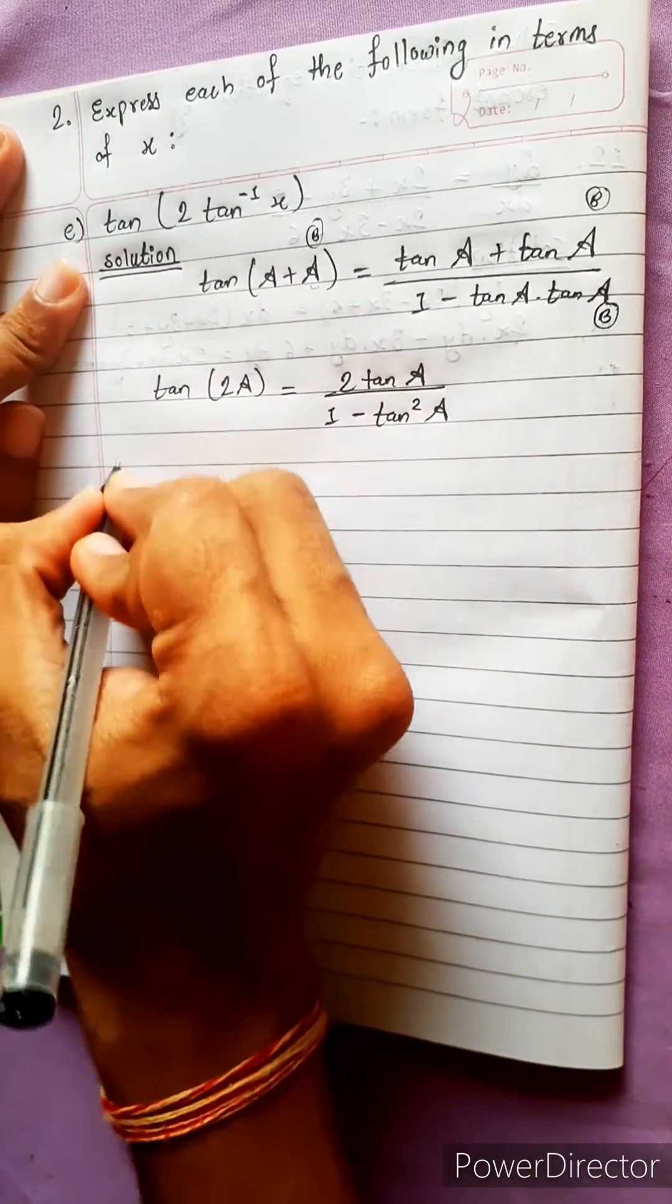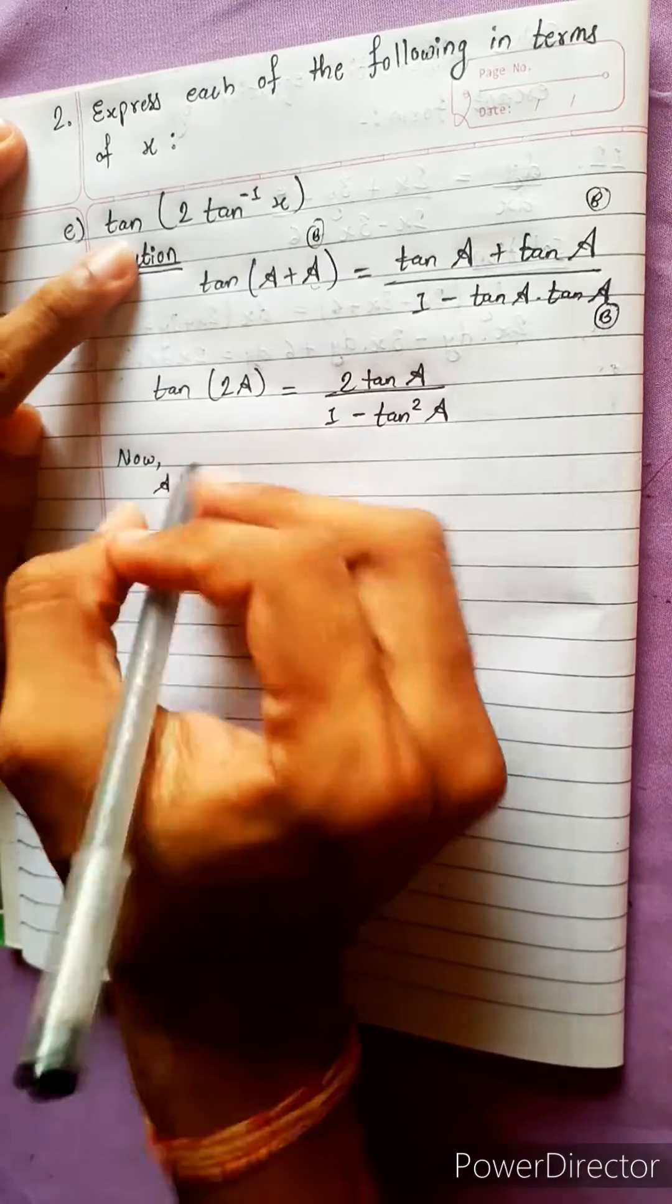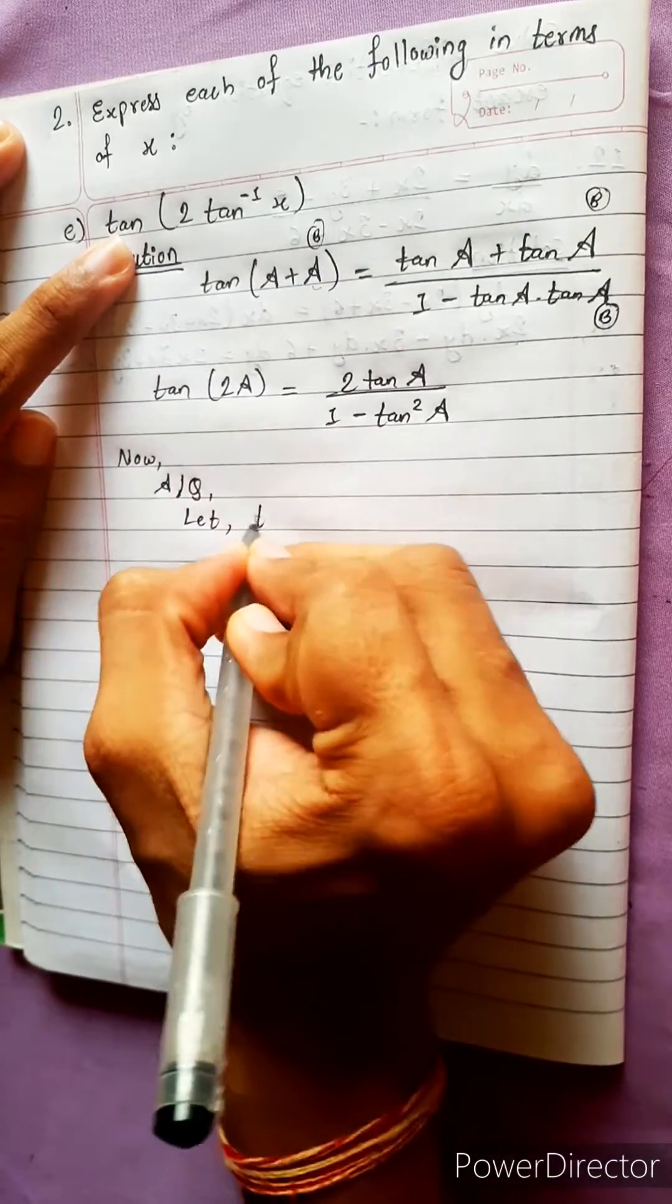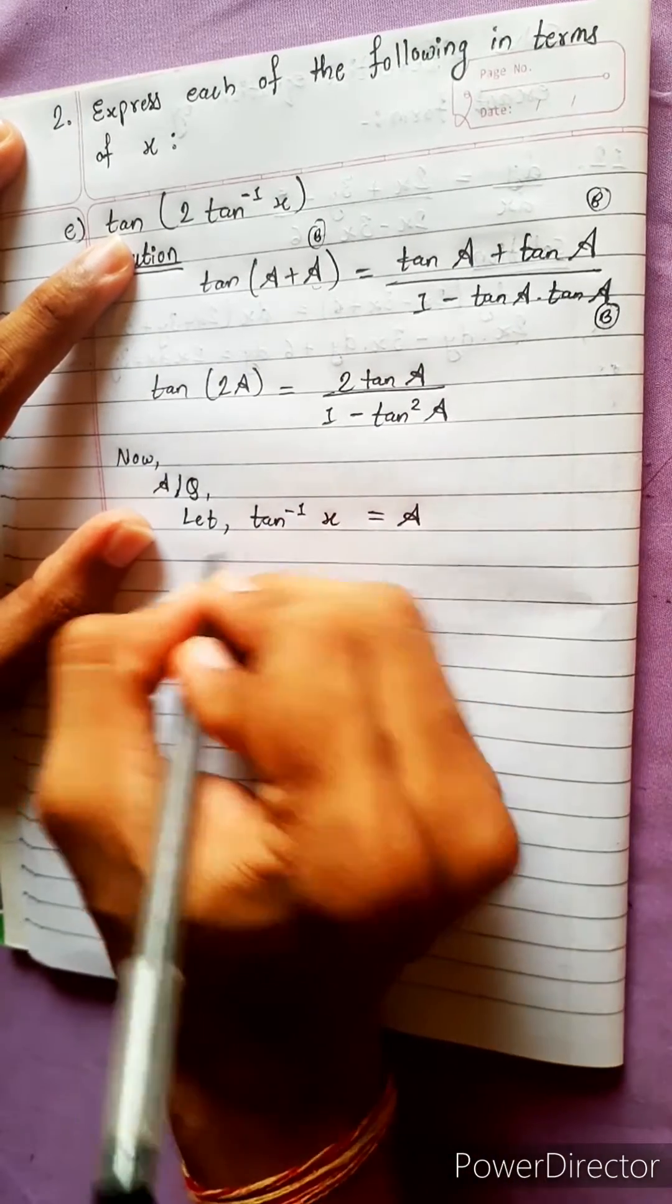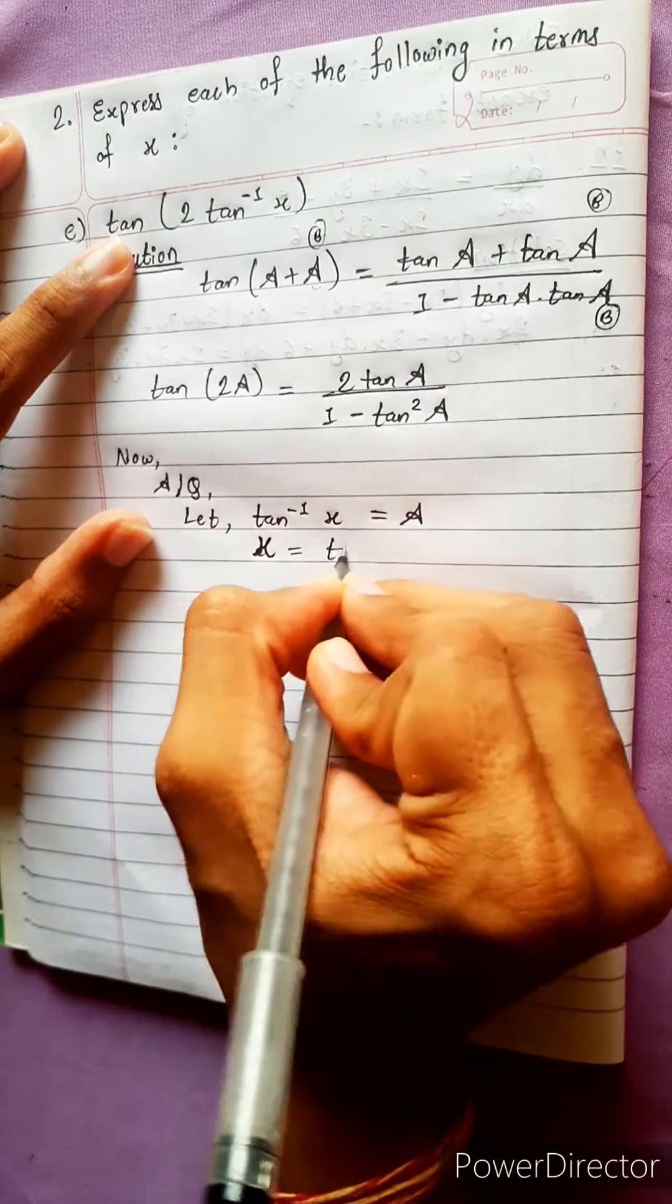Now, what is the question? According to question, tan to tan inverse x. Okay, let, first we have to let tan inverse x equals to A. Now, this tan goes to this side. Here will be x, x equals to tan A.